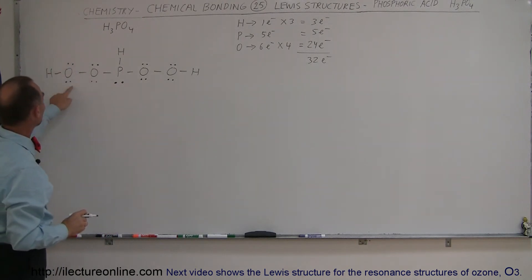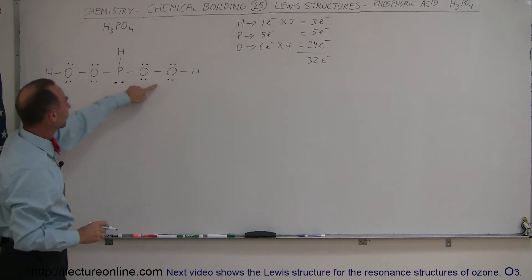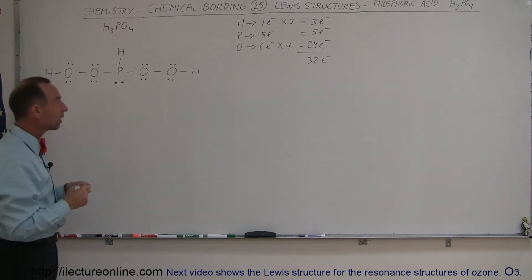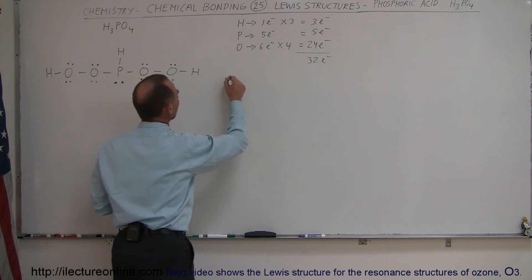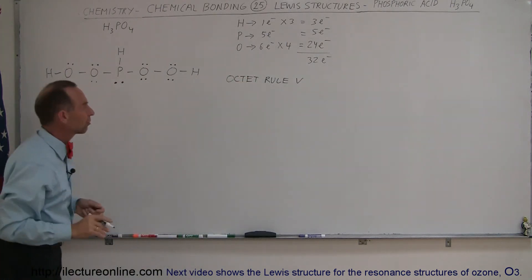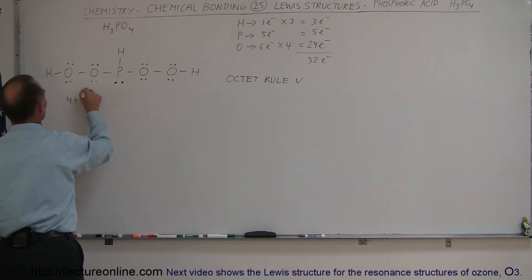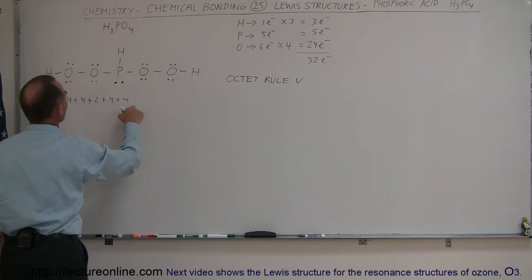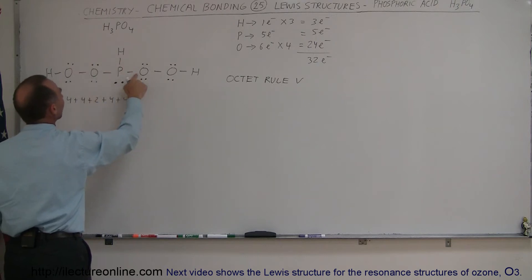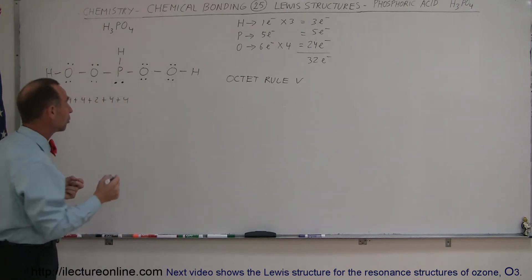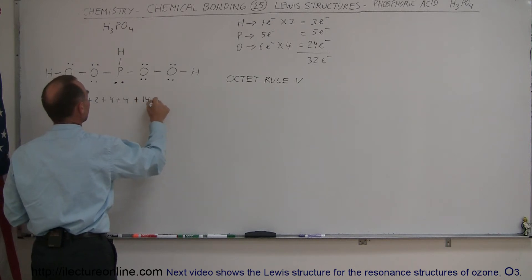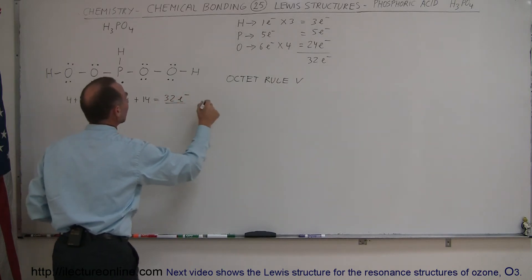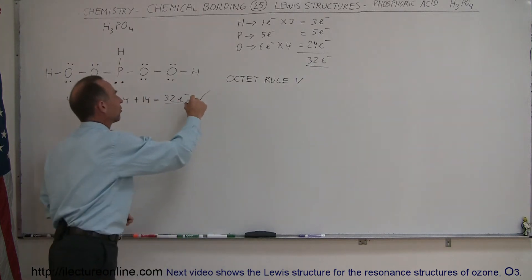Now notice we have the octet rule satisfied for the phosphorus and each oxygen. All the hydrogens are satisfied because they're sharing two valence electrons. Let's also verify the electron count: four plus four plus two plus four plus four accounts for the lone pair electrons. We have seven bonds, each containing two electrons — seven times two is 14. Four plus four plus two is ten, giving 18 plus 14 equals 32 electrons total, which matches our starting count. So the electrons are satisfied as well.